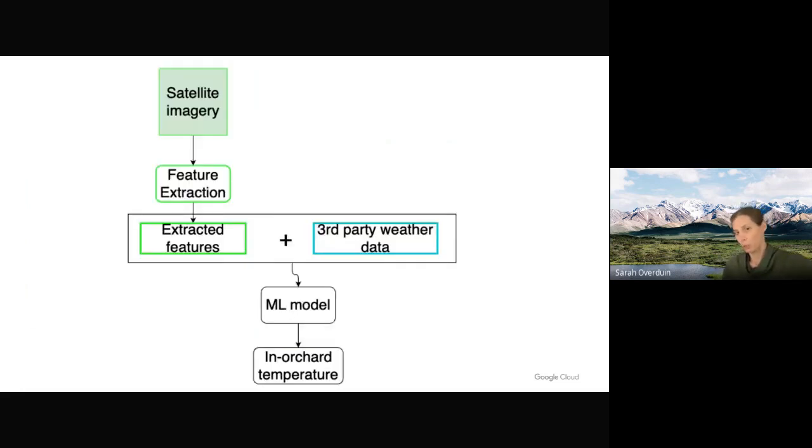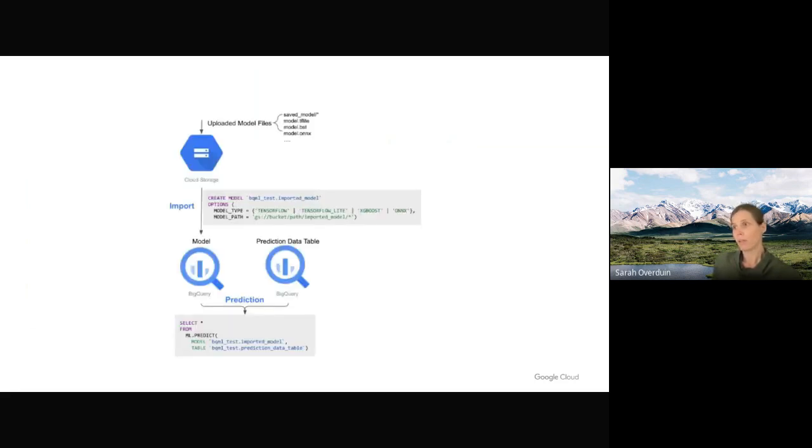So what we want to do is we want to actually use satellite imagery and extract features from them and include them as part of a model to predict the in-orchard temperature. So we get third-party weather data, we combine that with our extracted features from images, create a machine learning model, and use in-orchard temperature to predict in-orchard temperature. So we currently have implemented just using the third-party weather data, as well as some other local features that we have to predict the in-orchard temperature. But using the imported model feature that is now available, we can also use satellite imagery and extract the features from those.